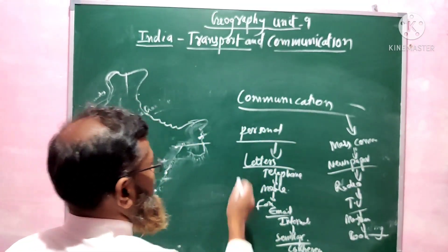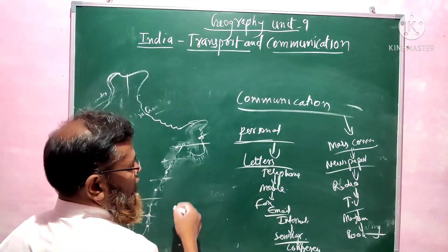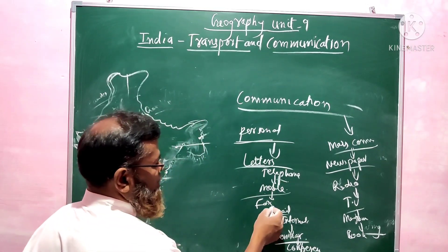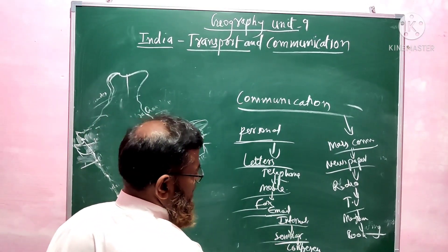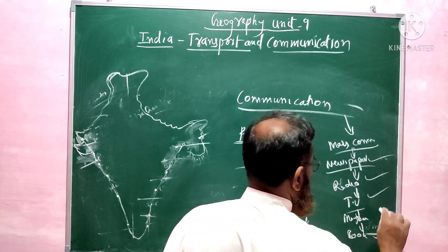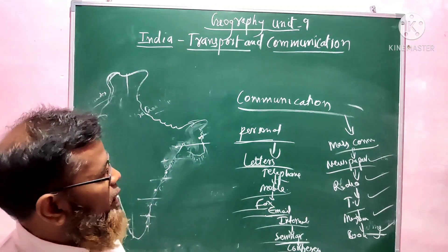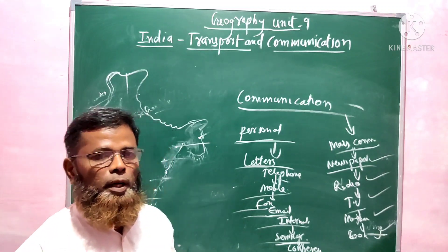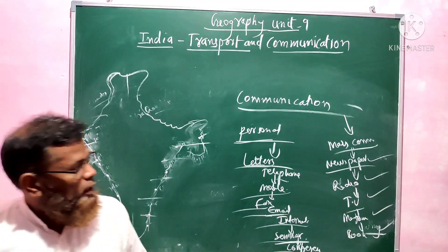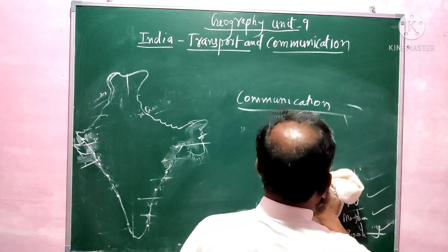Communication is divided into two: personal communication and mass communication. In personal communication we come across telephone services, letters, mobile services, fax, email, internet services, seminars, and conferences. In mass communication we come across newspapers, radio, television, magazines, and books — communicating in quantity to many people.